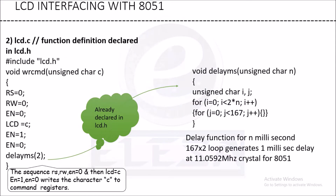Next we will see LCD.c. The function definitions are declared in LCD.h. In LCD.c, we look at the function wrcmd — that is the write command function. In the write command, the sequence is: rs equal to 0, rw equal to 0, en equal to 0, then set LCD equal to character c, then en equal to 1, then en equal to 0. This typical sequence writes character c to the command register.